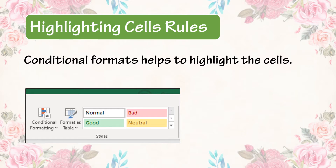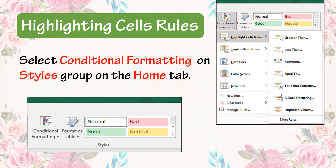Highlighting Cells Rules: Conditional Formatting helps to highlight the cells. Select Conditional Formatting on the Styles Group on the Home tab. When you select Conditional Formatting, you will get different types of Conditional Formatting which you can apply to the cells.